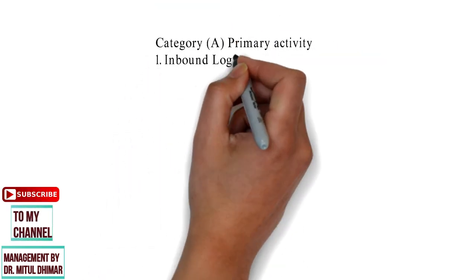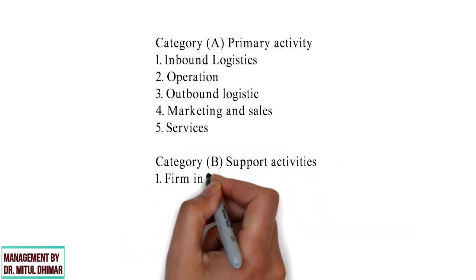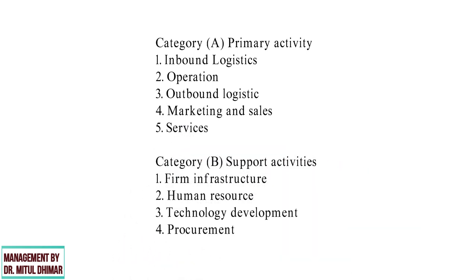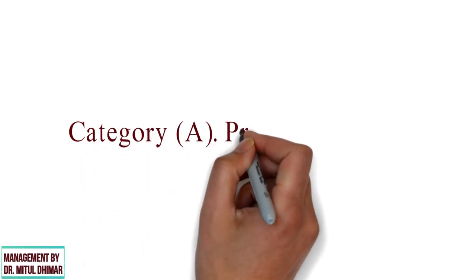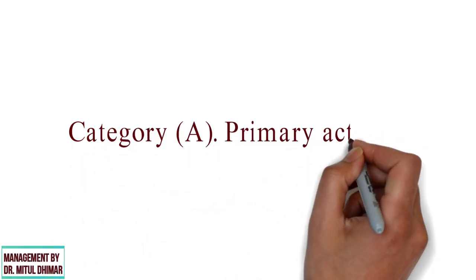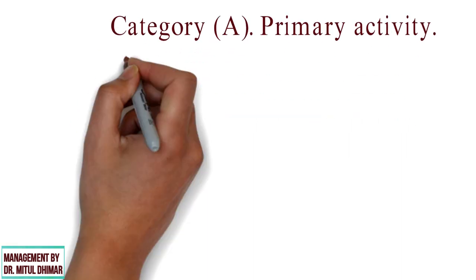The following points are covered in Michael Porter's value chain approach. Please watch my video till the end because you will find different examples for each and every point we are going to study today. Category A: Primary Activities. Primary activities are those activities that are involved in the creation of a product or service. Porter has classified these primary activities into five groups.